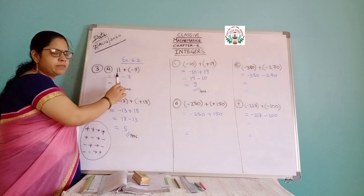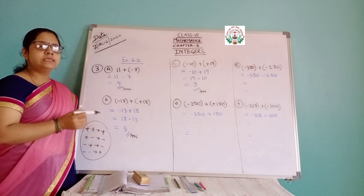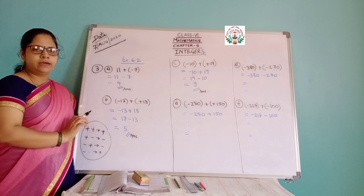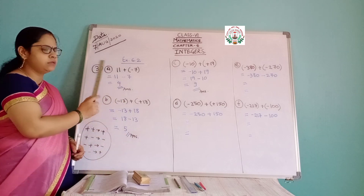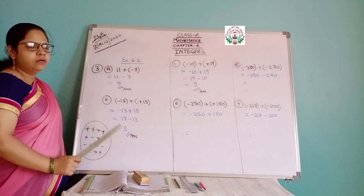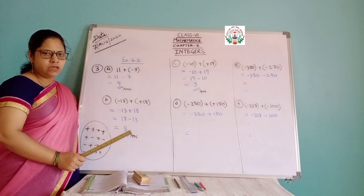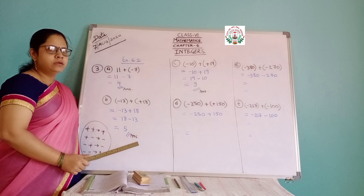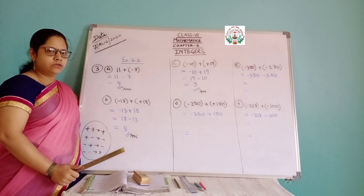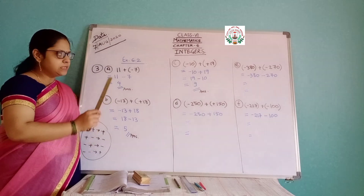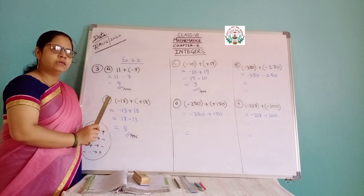For putting the sign in front of the answer, you always have to see the greater number. You will be very clear with this as we go through all these questions. This is Exercise 6.2, Question 3 — you have to solve: add, without using the number line. Using the number line I explained earlier, and it is in the PDF also. These kinds of questions will be very important for the exam and for further classes as well. It is a simple starting point.